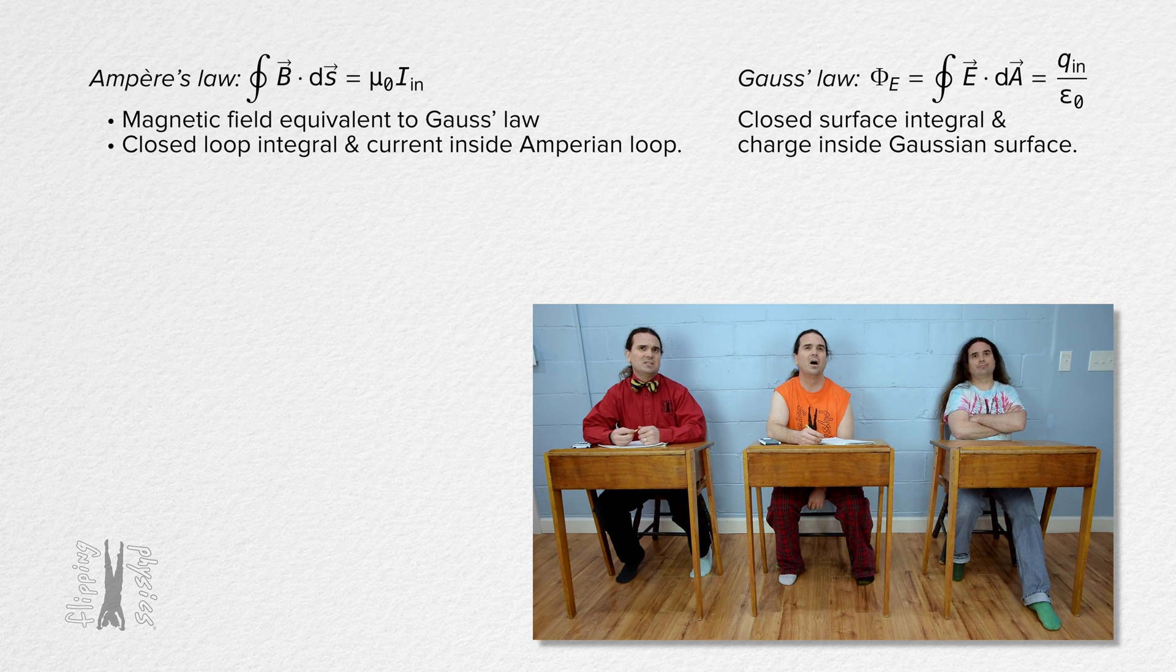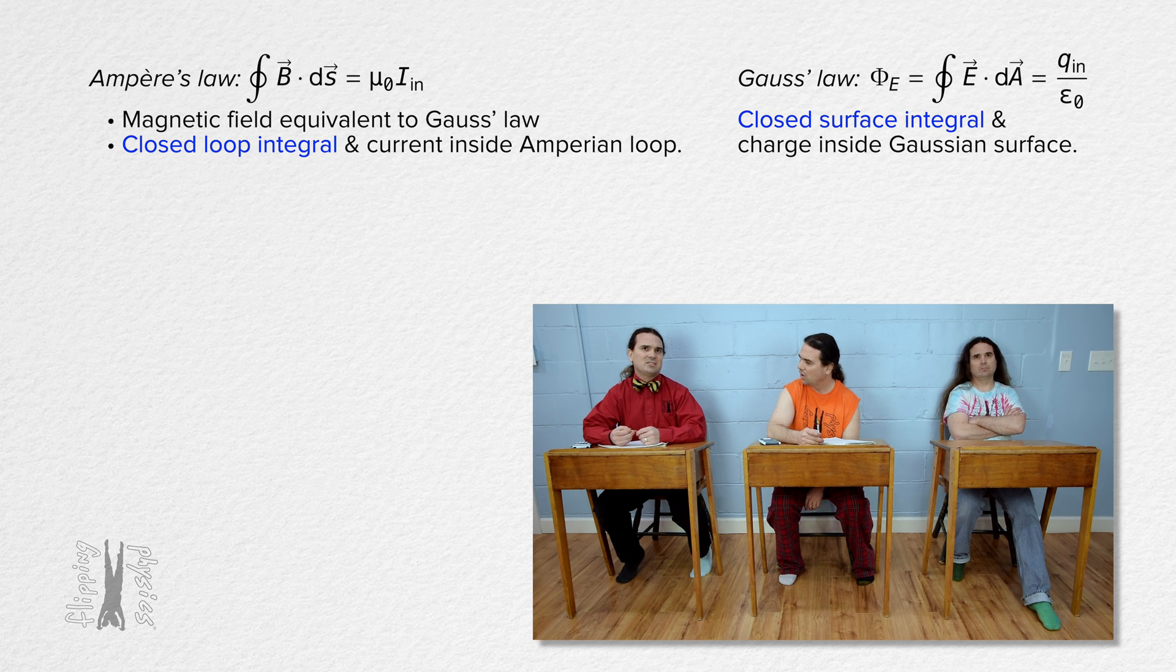Ampere's Law does seem to have a lot of similarities to Gauss's Law for electricity. However, Ampere's Law uses a closed-loop integral instead of a closed-surface integral, and Ampere's Law has to do with the current inside an Ampereian loop instead of the charge inside a Gaussian surface. But yeah, they do seem similar.